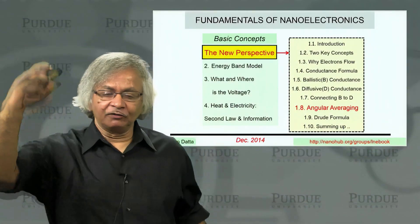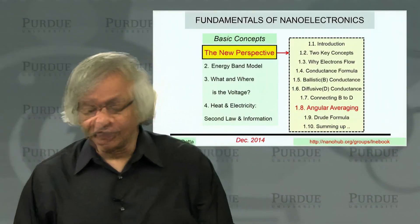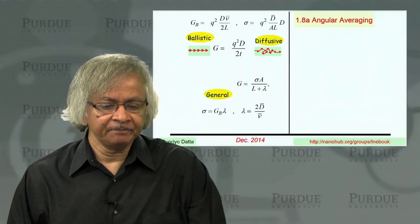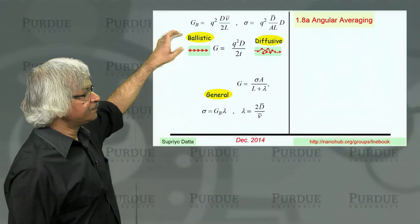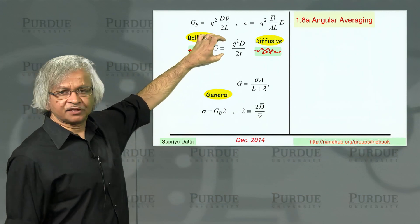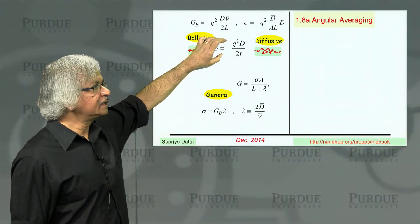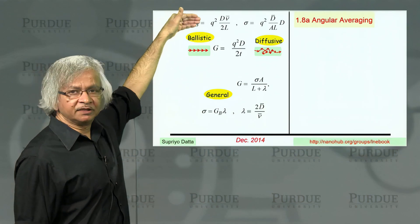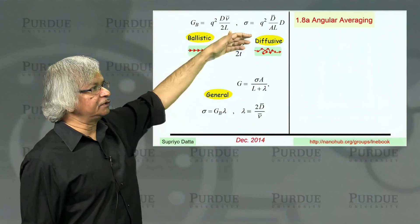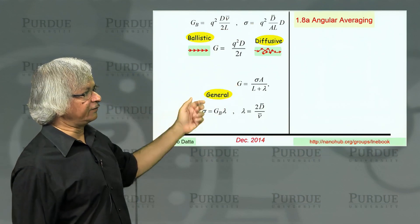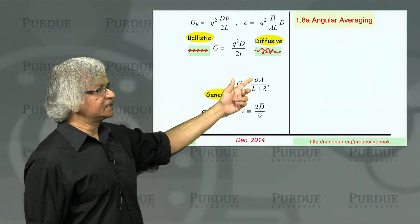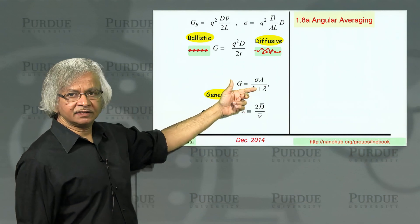Welcome back to Unit 1 of our course, The New Perspective. We are now on Lecture 8. Now what we did in the last three lectures, we started from this expression for conductance we had and applied it first to the ballistic limit, then to the diffusive limit, and then we said you could connect it all together and write G as sigma A over L plus lambda.